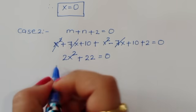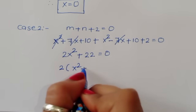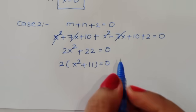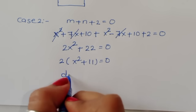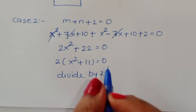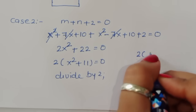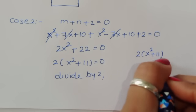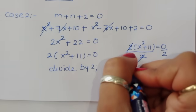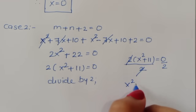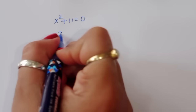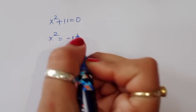Taking 2 as common: 2(x²+11) = 0. Dividing both sides by 2, we get x²+11 = 0. Therefore x² = -11.